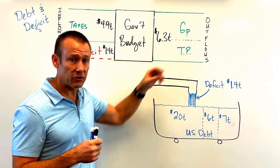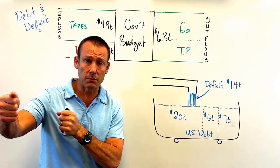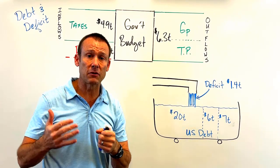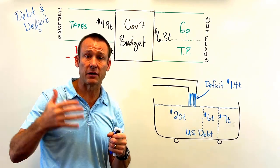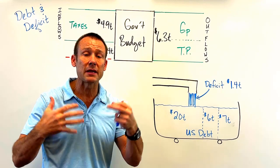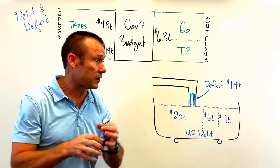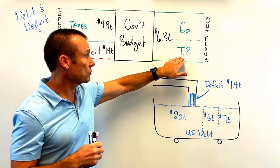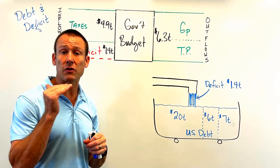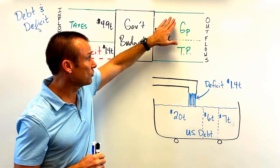Then we've got transfer payments — when we just transfer money from taxpayers to recipients. That could be in the form of Social Security, unemployment compensation, or many other transfers. A lot of people just call these government transfers — same thing.